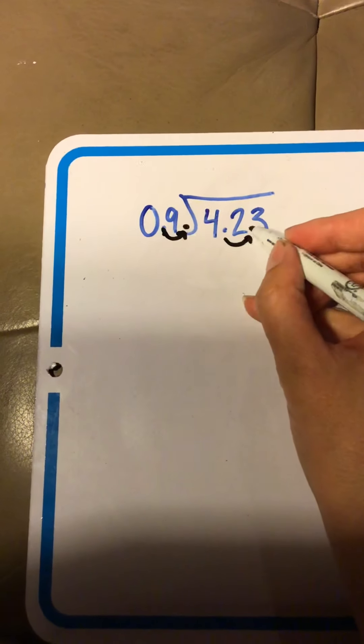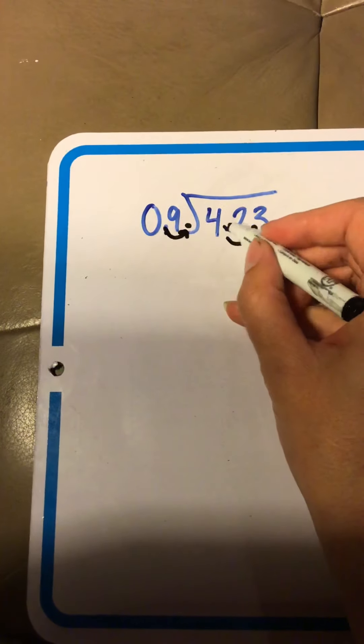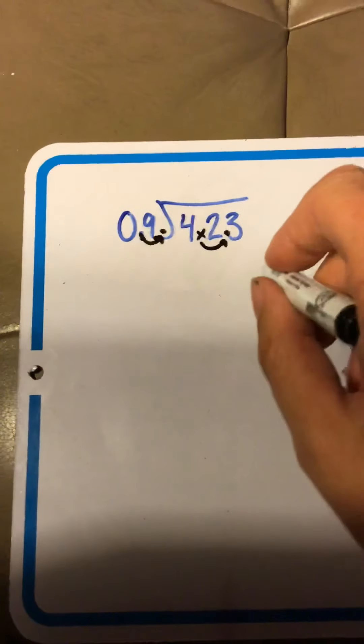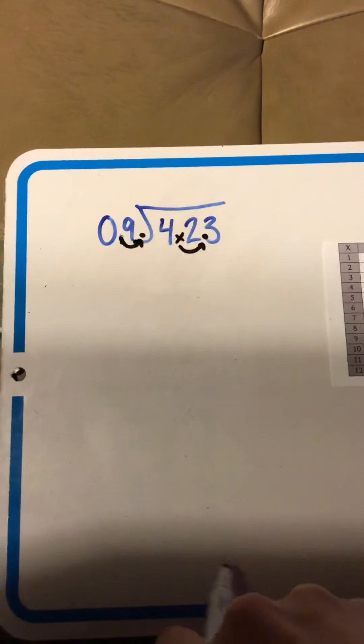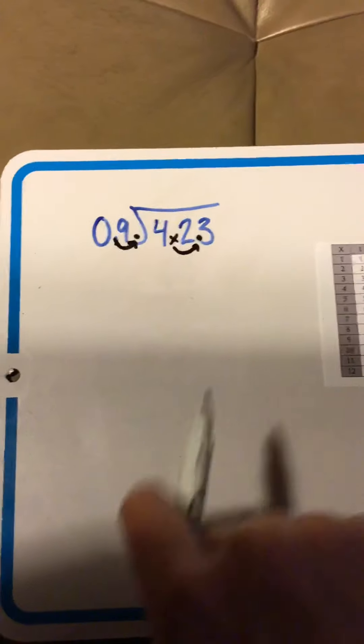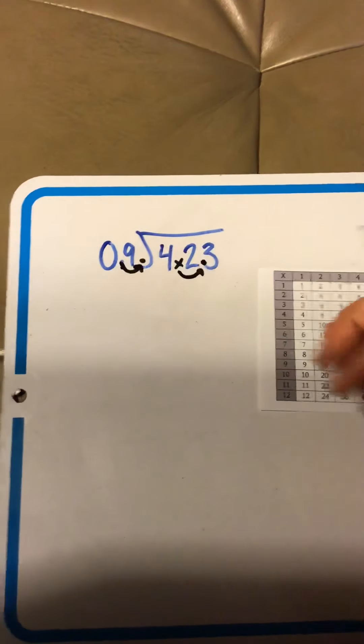Same direction, same number of hops. No longer the decimal point. Okay, so now, it looks like we have 42.3 divided by 9. Well, we can use our handy multiplication chart to solve that one. Let's start.